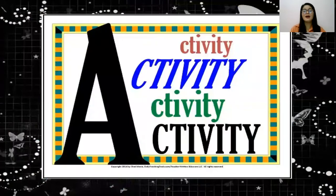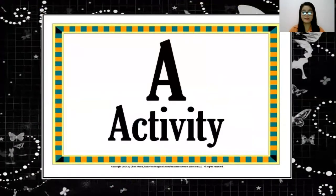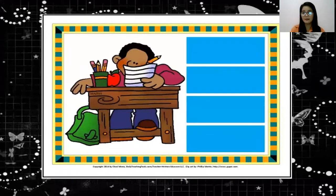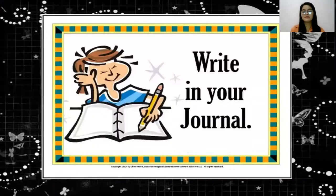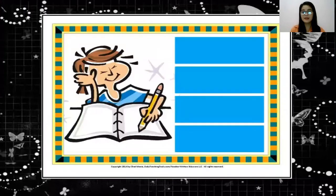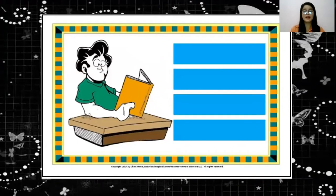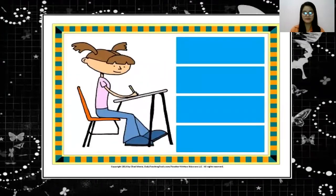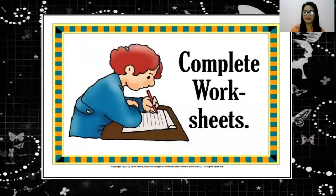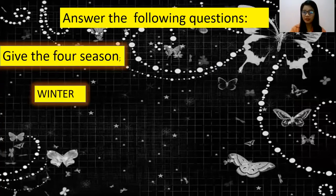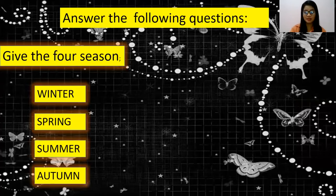So we have an activity, but before that, I hope you understand that we have four seasons in the world: winter, spring, summer, and autumn. So are you ready to do the activity? I think you're ready. Let's go! Answer the following questions. Give the four seasons — we have four seasons: winter, spring, summer, and autumn.